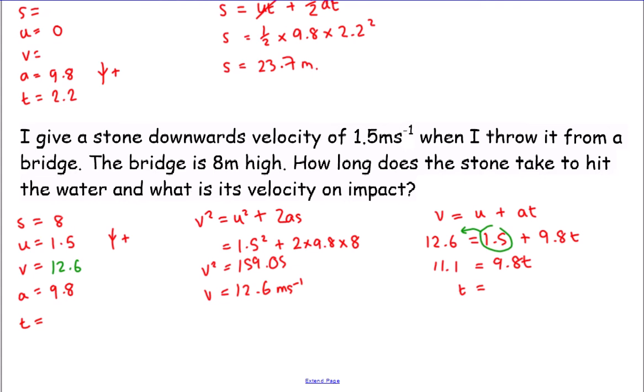The stone took 1.13 seconds, which is less time than if we'd just dropped it, because the initial downward velocity of 1.5 m/s means it reaches the water faster. That covers problems where the object only moves in one direction — downwards.